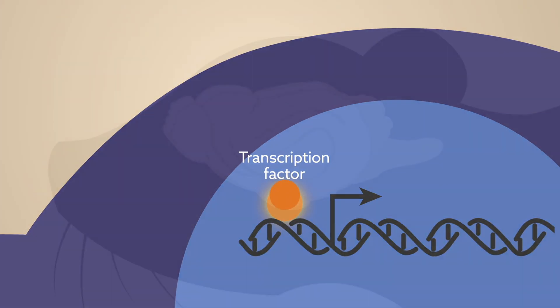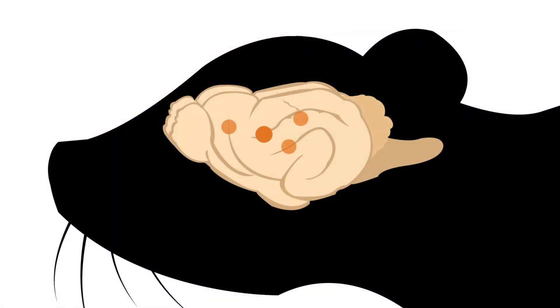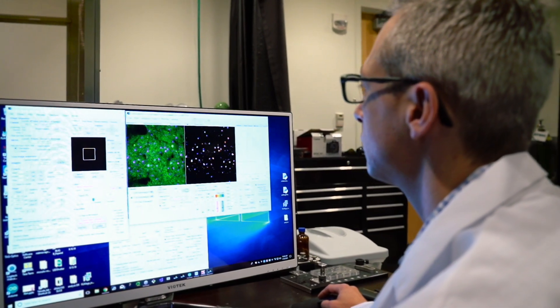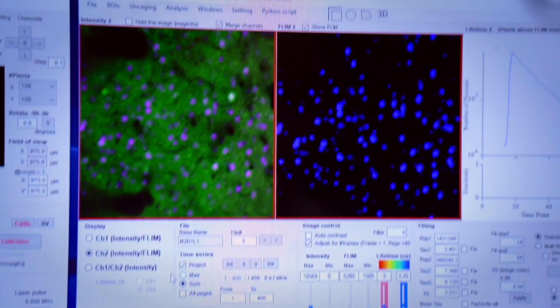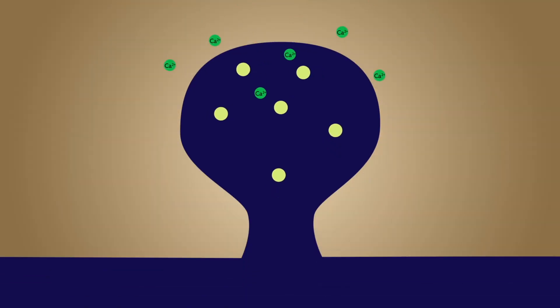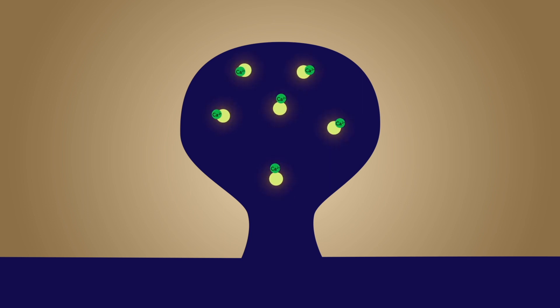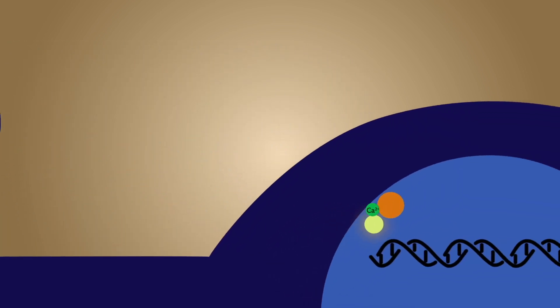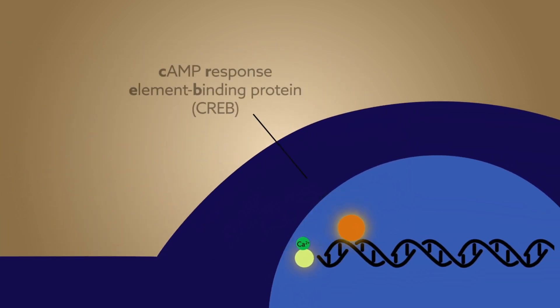However, it was impossible to monitor their activity in the living brain, until now. In this study, scientists in the Max Planck Florida Institute for Neuroscience have developed a biosensor capable of visualizing the activation of the transcription factor cyclic AMP response element binding protein, or CREB.